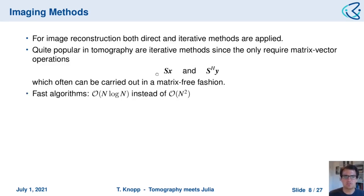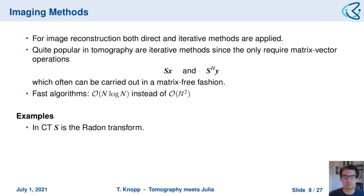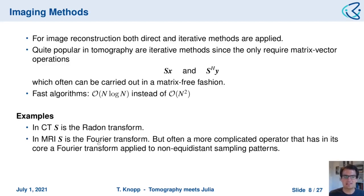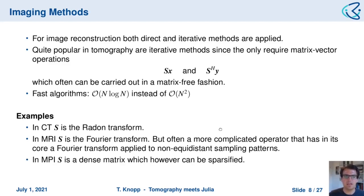These transformations often have fast implementations. For instance, if S is a Fourier transform, we can apply the fast Fourier transform requiring only n·log(n) instead of n². In computer tomography, S is the Radon transform. In magnetic resonance imaging, S is the Fourier transform, although in practice it's more complicated with additional terms and a non-equidistant sampling pattern in k-space. In magnetic particle imaging, MPI, S is a dense matrix but can be sparsified under a certain transformation.